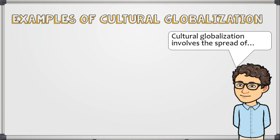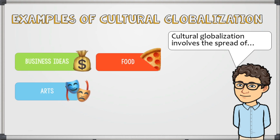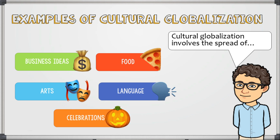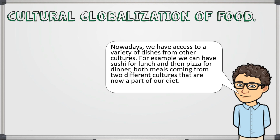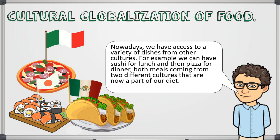Examples of cultural globalization. Cultural globalization involves the spread of business ideas, food, arts, language, and celebrations. Let's look at these aspects separately, starting with the globalization of food. Nowadays we have access to a variety of dishes from other cultures. For example, we can have sushi for lunch and then pizza for dinner — both meals coming from two different cultures that are now part of our diet. Pizza is traditional in Italy, tacos come from Mexico, and sushi comes from Japan.